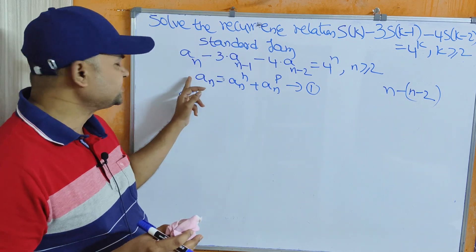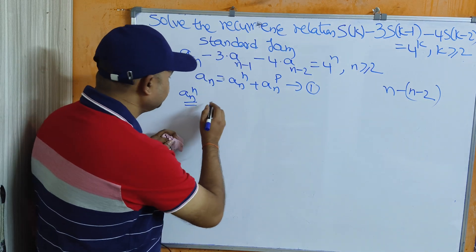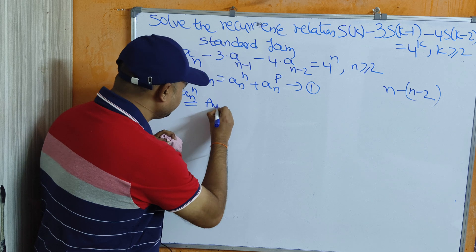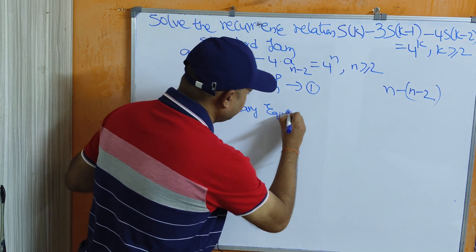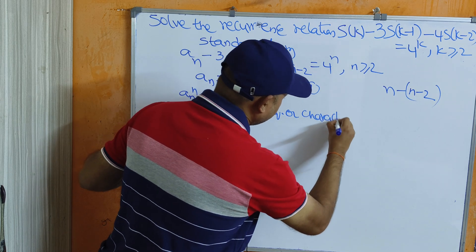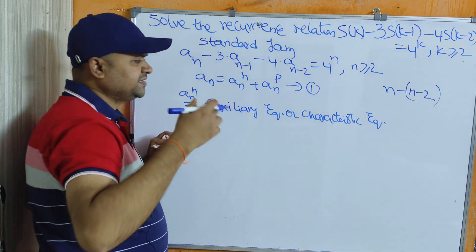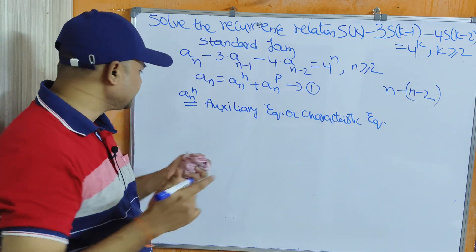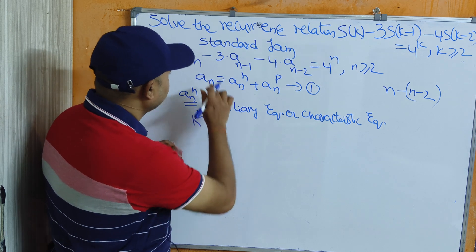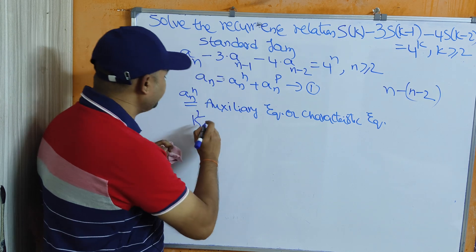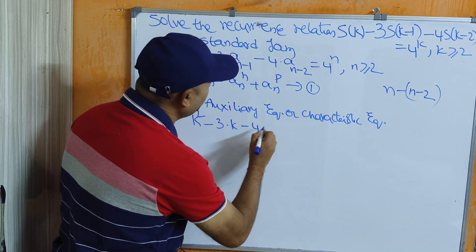After that we write the general solution. The auxiliary or characteristic equation for a second-order homogeneous recurrence relation is: k² - 3k - 4 = 0, where the first constant is 1, second is -3, and third is -4.